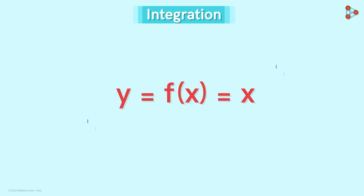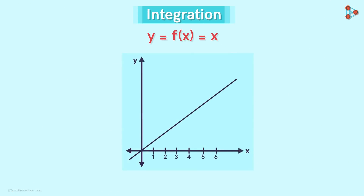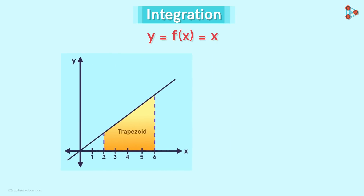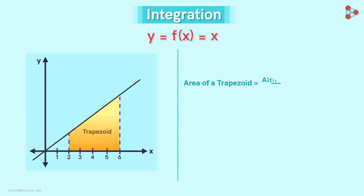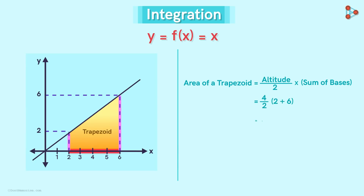Consider this function. Let's say we want to find the area under the graph between x equal to 2 and 6. Can you tell me what is this shape? It's a trapezoid. Even without integration, we know how to find its area — it's equal to half of its altitude times the sum of its bases. Here the bases of this trapezoid are these two lines and its altitude is this line. Solving this gives us the area of the trapezoid as 16. But how can we use integration to find this area? Will we get the same answer?